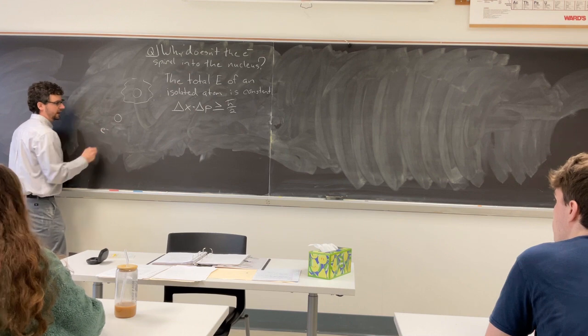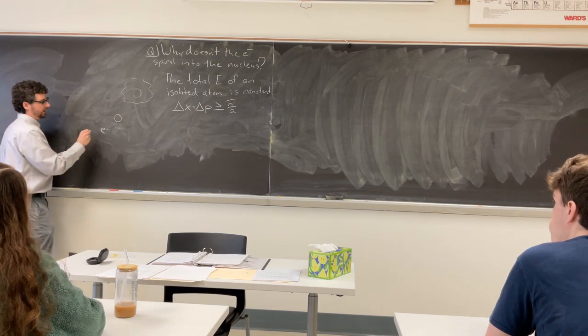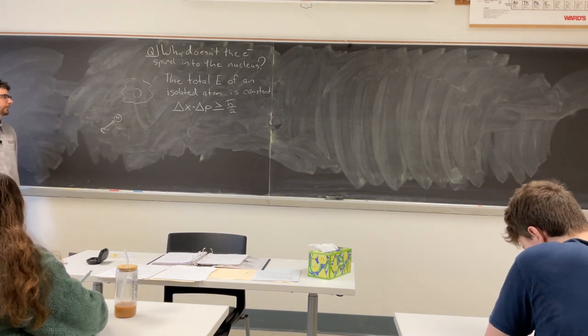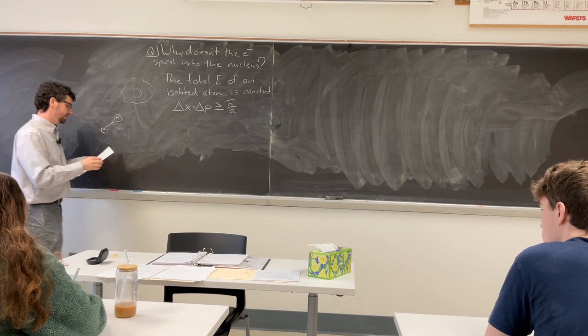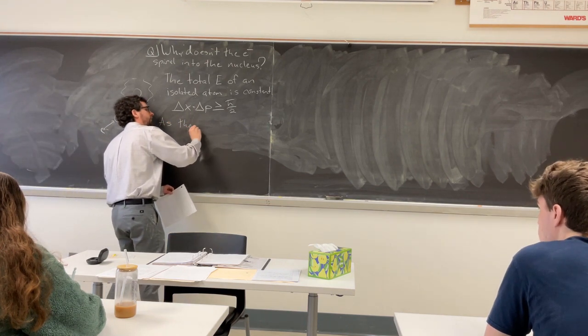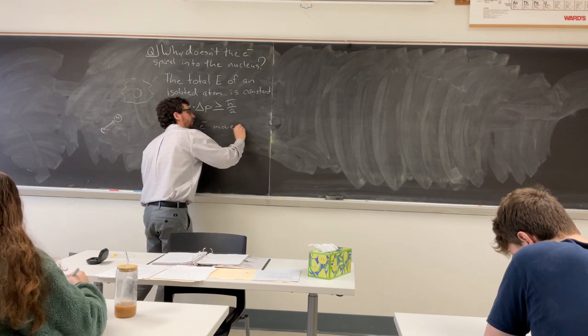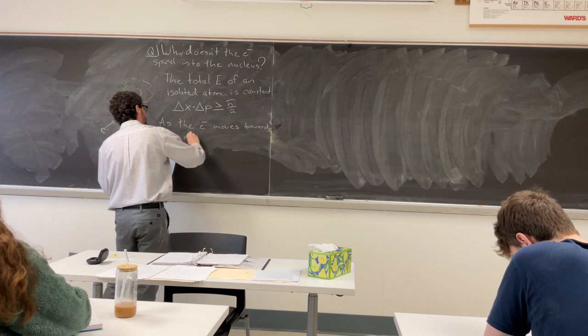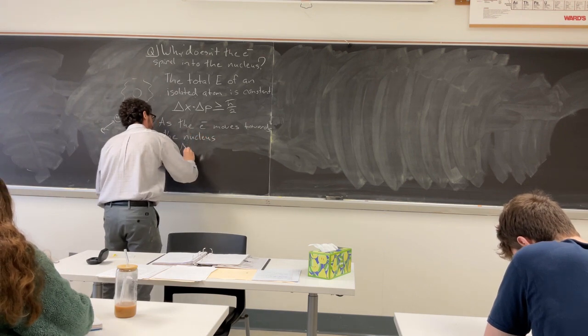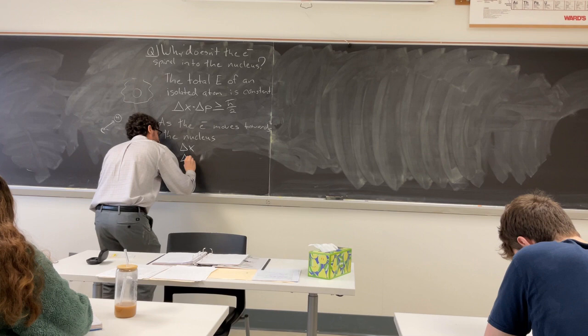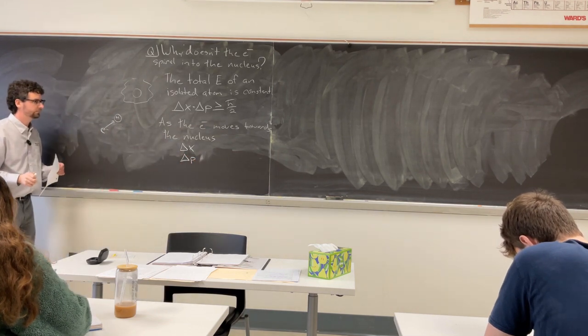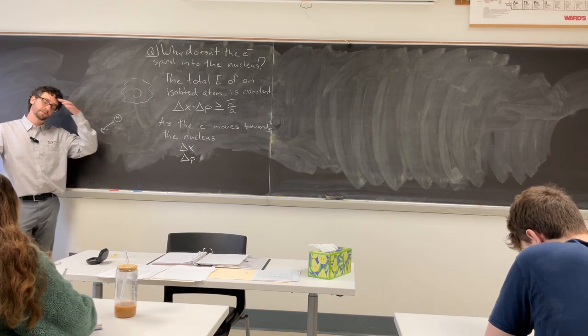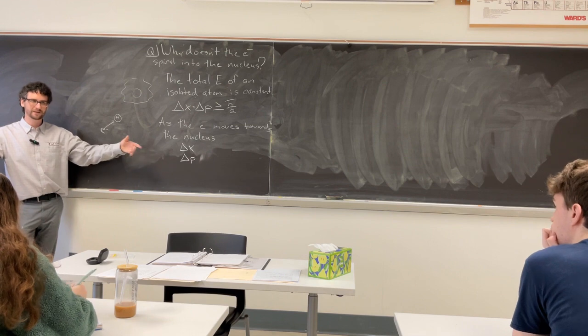So let's consider an electron, and it's traveling in a path towards the nucleus. So as the electron moves towards the nucleus, let's consider the uncertainty in position and the uncertainty in momentum.